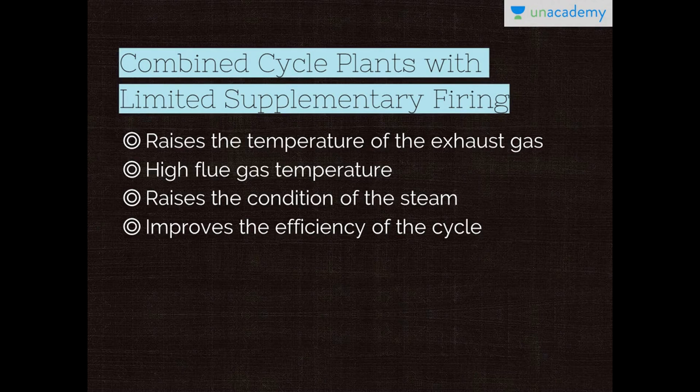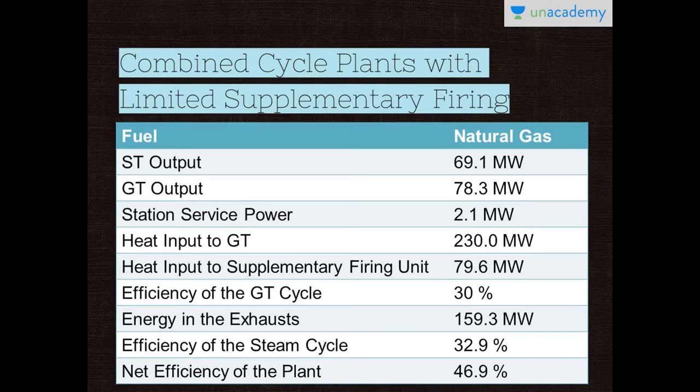Let's move on to the combined cycle plants with limited supplementary firing. Supplementary firing raises the temperature of the exhaust gas to 800 to 900 degrees centigrade. Relatively high flue gas temperature raises the condition of the steam to 84 bar, 525 degrees centigrade, thereby improving the efficiency of the cycle. I have given a table which is the example of a combined cycle plant with limited supplementary firing. The fuel used is natural gas.